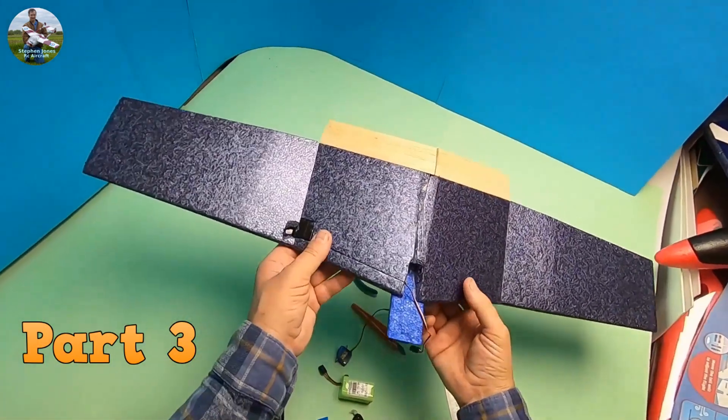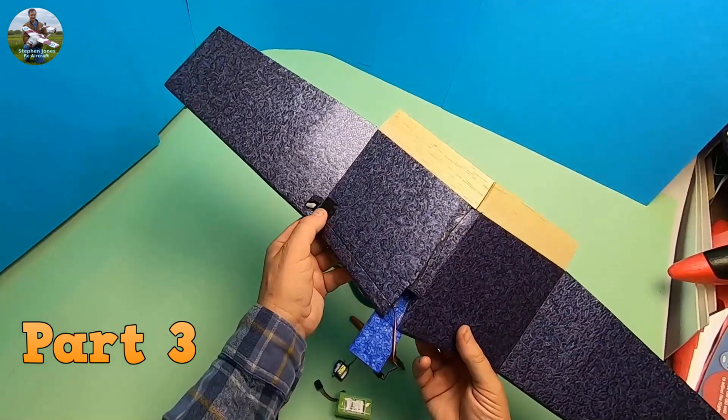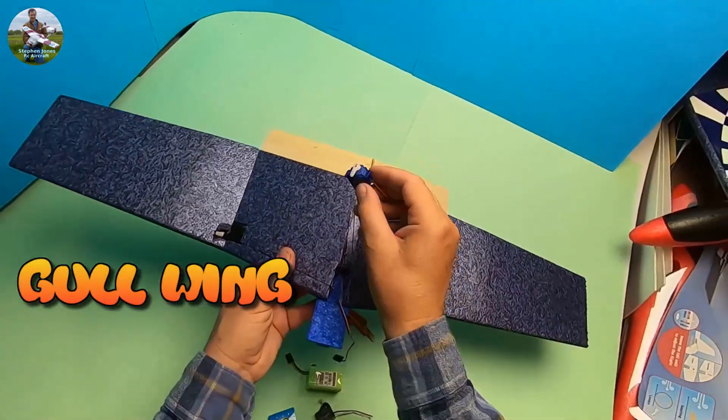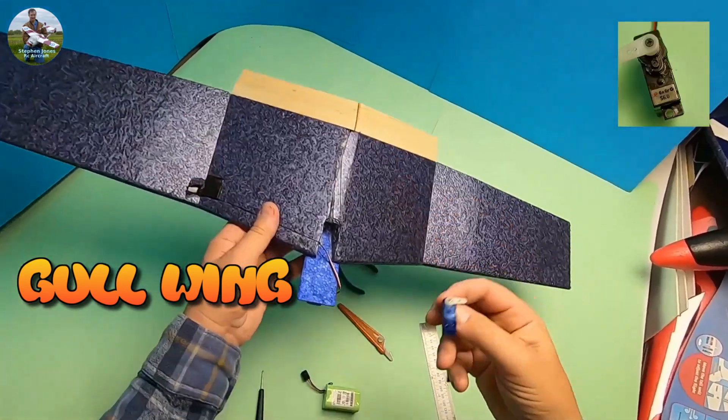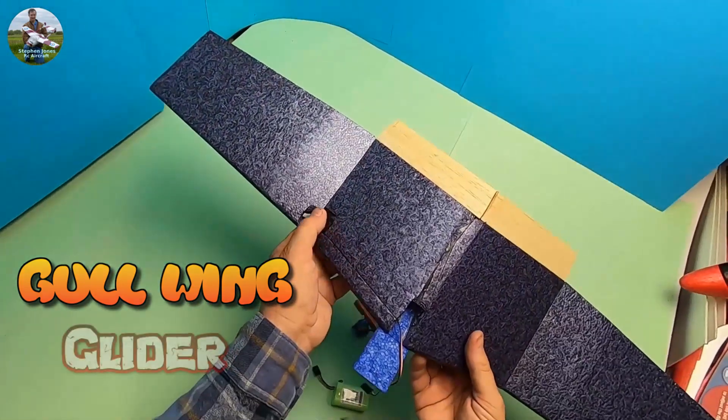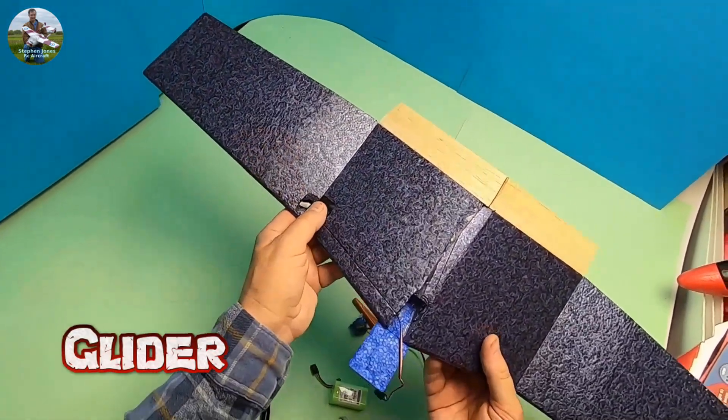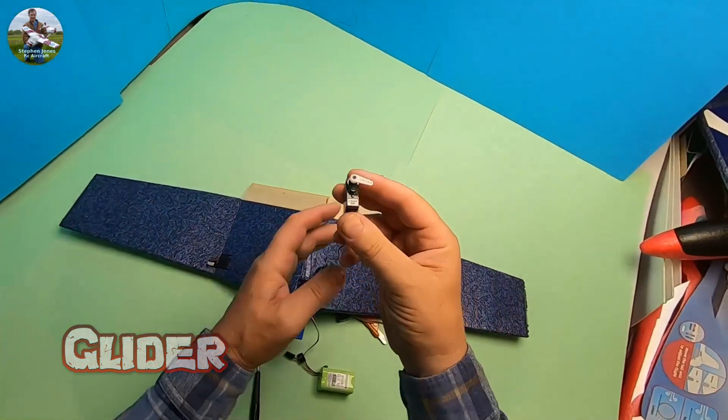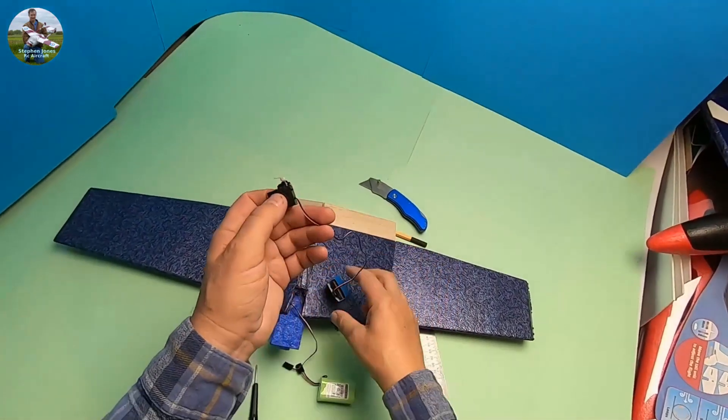Okay, so it's now time to fit the aileron servos. I've got a six gram servo in there. The other one I used a five gram servo. You don't really need a big nine gram servo in there, so I've used six gram servos. I've cut the lugs off because I don't need them.